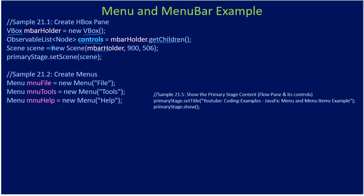Here we are creating three menus. For the Menu constructor, we pass a string — for example, 'File', 'Tools', and 'Help' — which will appear as the caption for each menu.